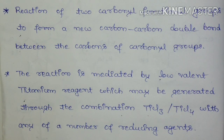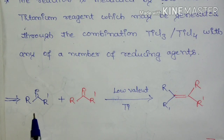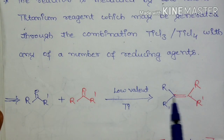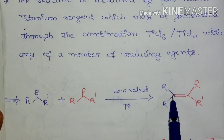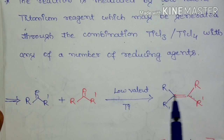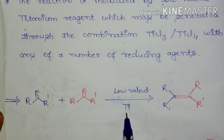The general reaction for McMurray Coupling is given here: two carbonyl groups are going to couple to form a new carbon-carbon double bond between the carbons of the carbonyl group. This is the carbon-carbon double bond which is formed between the carbonyl carbons, and this reaction is mediated by low-valent titanium reagent.